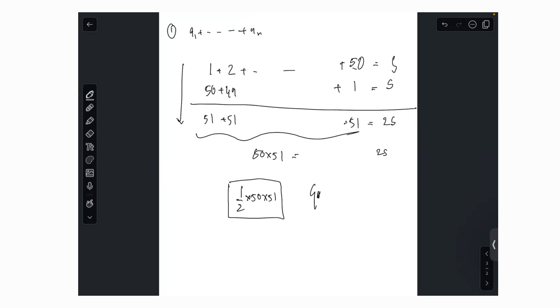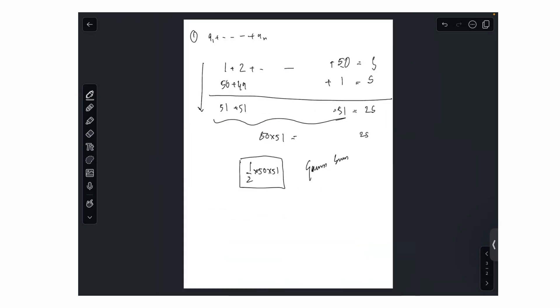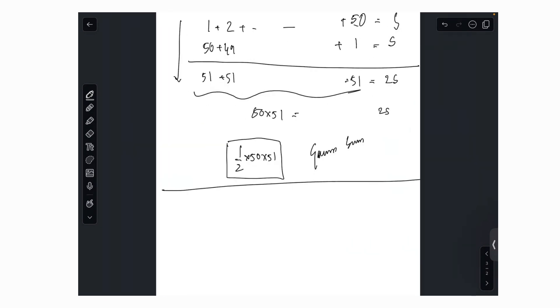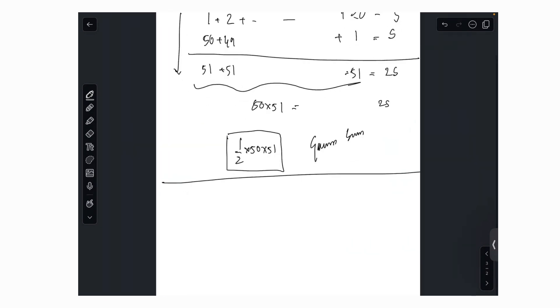So we'll use this Gauss summation to find out the arithmetic progression sum. So we have a one, we have a one plus d, a one plus 2d, we have a one plus n minus 1d. Let's call this S. If you change it in the same manner, you will have a one plus n minus 1d. Here you will have a one plus n minus 2d, and you go on, here you will have a one.